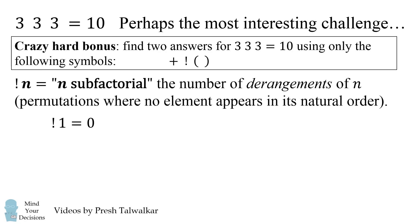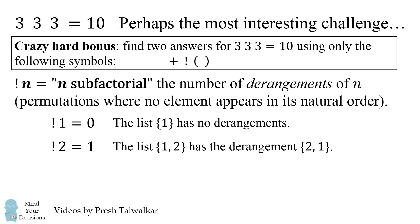1 sub factorial is equal to 0. This is because the list 1 has no derangements. The only way you can order 1 is to have 1. 2 sub factorial is equal to 1. This is because the list 1 comma 2 has the derangement 2 comma 1. 2 is in the wrong spot and 1 is in the wrong spot. But there's no other way that you could arrange the elements like this.